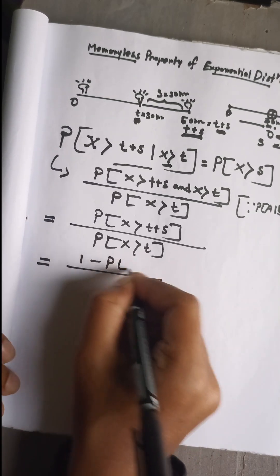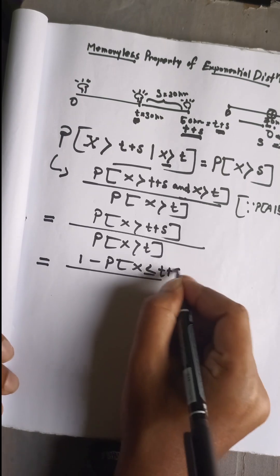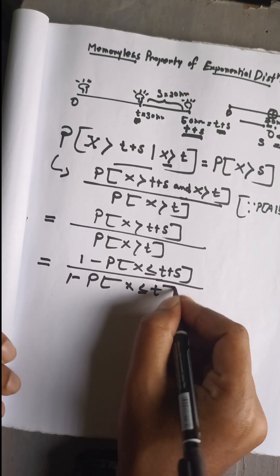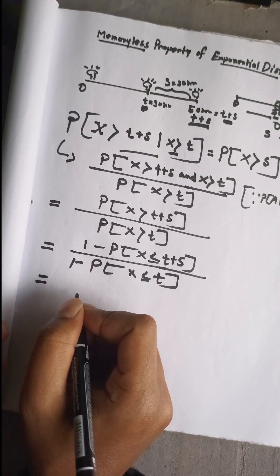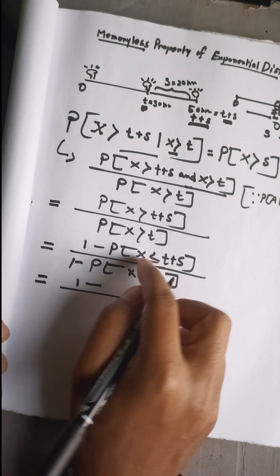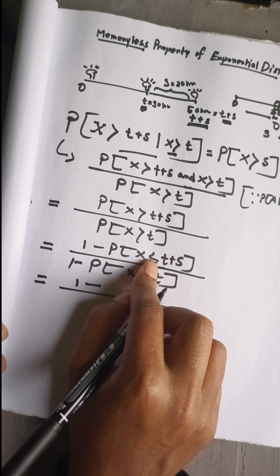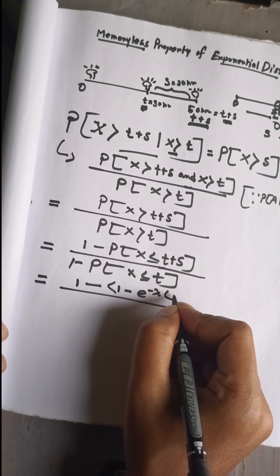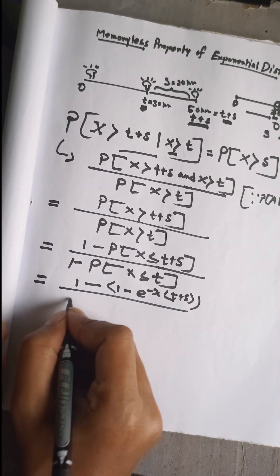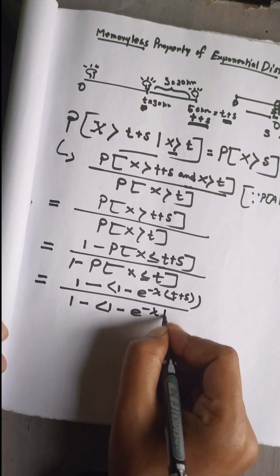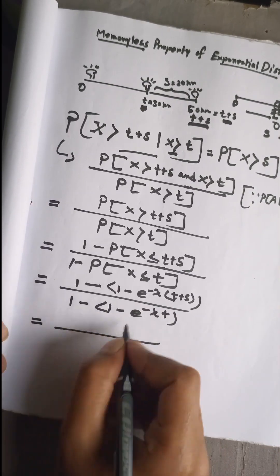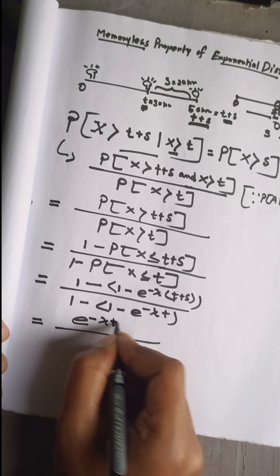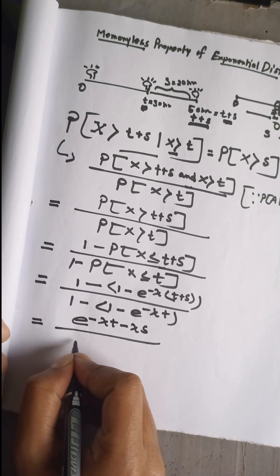Next I can write this as: 1 minus P(X ≤ t+s), divided by 1 minus P(X ≤ t). Then I apply the CDF formula of the exponential distribution — as we already know, the CDF is 1 minus e to the power negative lambda times t. So the numerator becomes 1 minus (1 minus e^{-λ(t+s)}), and the denominator becomes 1 minus (1 minus e^{-λt}). Simplifying, the numerator becomes e^{-λt - λs} and the denominator becomes e^{-λt}.